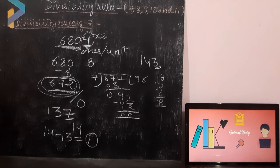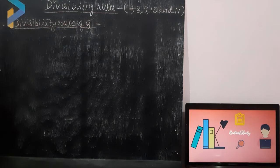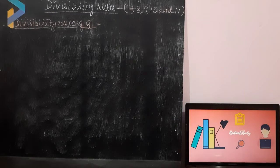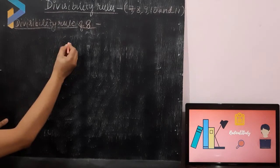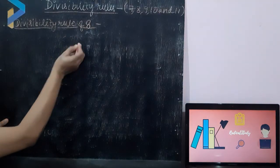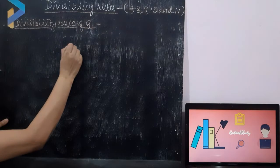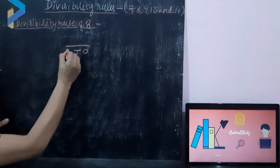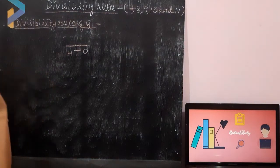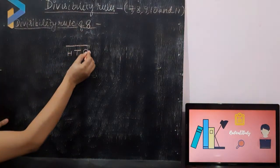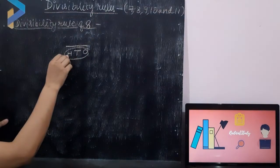Now I am going to explain the next rule: the test of divisibility of 8. The rule of 8 says that any number is divisible by 8 if the digits at 1's place, 10's place and 100's place — we have to look at 3 positions: 1's, 10's, 100's — and if the 3-digit number formed by these positions is divisible by 8.